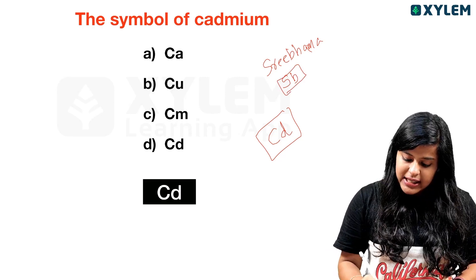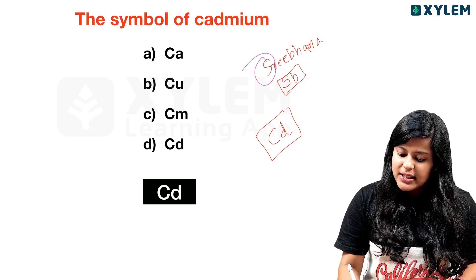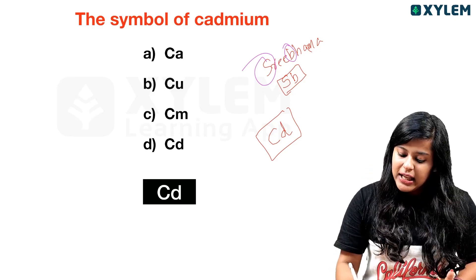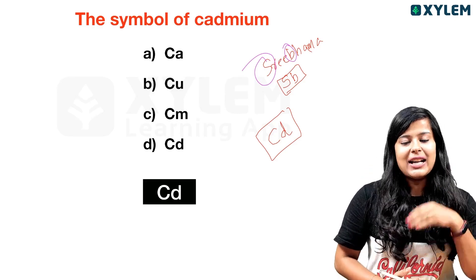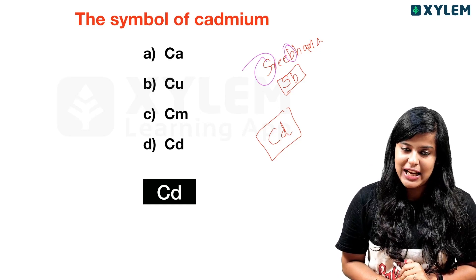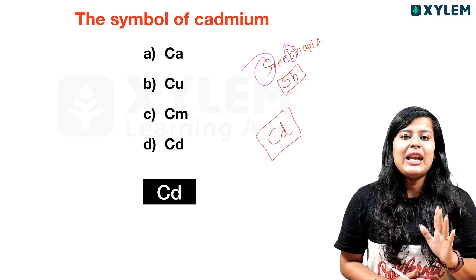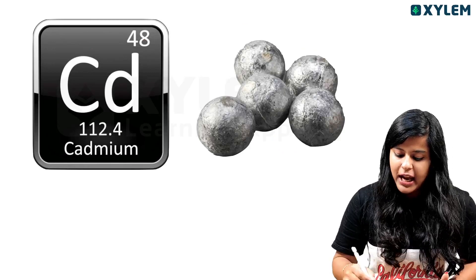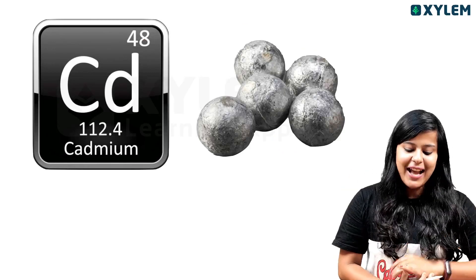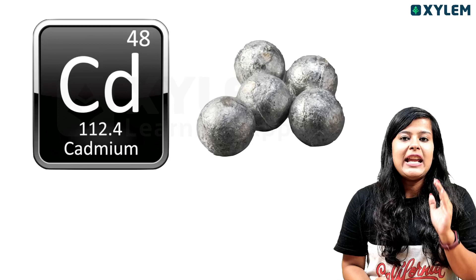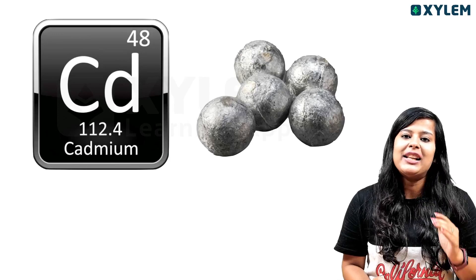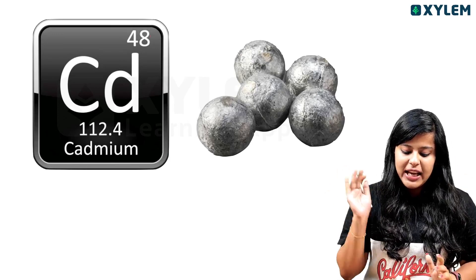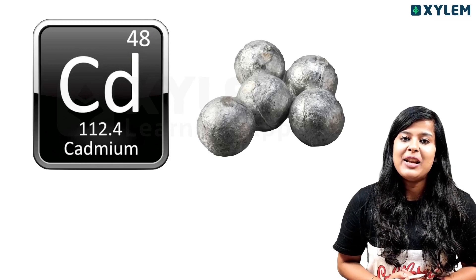When a symbol has two letters, the first letter is always capital and the second letter is small. So cadmium is written as Cd — capital C, small d. Cadmium is element number 48 in the periodic table.